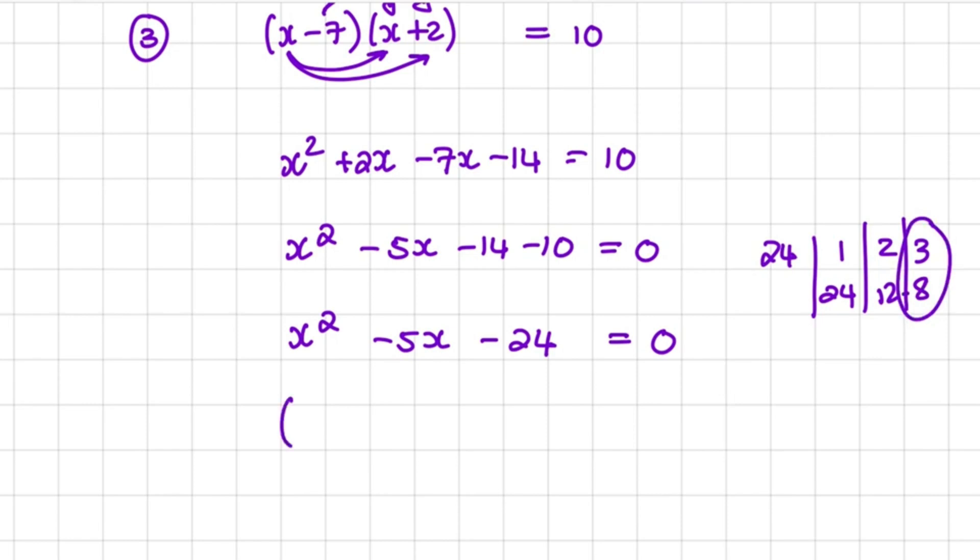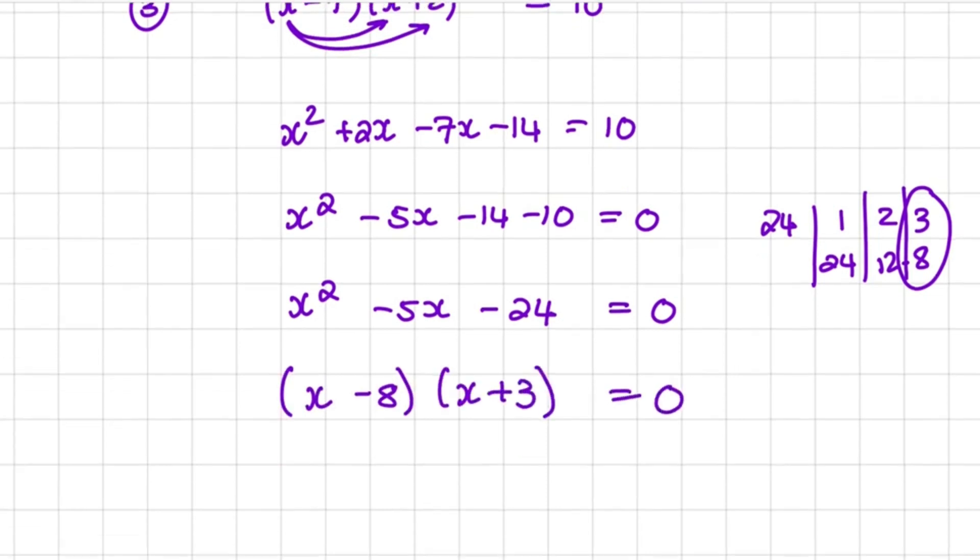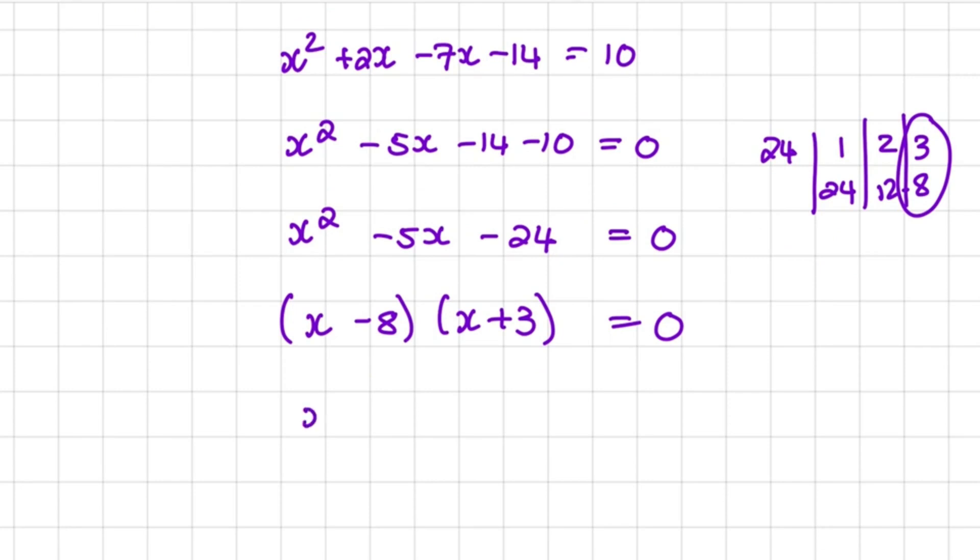So when I factorize, it will be (x minus 8)(x plus 3) equals 0. And now to solve for x, I'll make each set of brackets equal to 0. So x can be equal to plus 8 or x could be equal to negative 3.